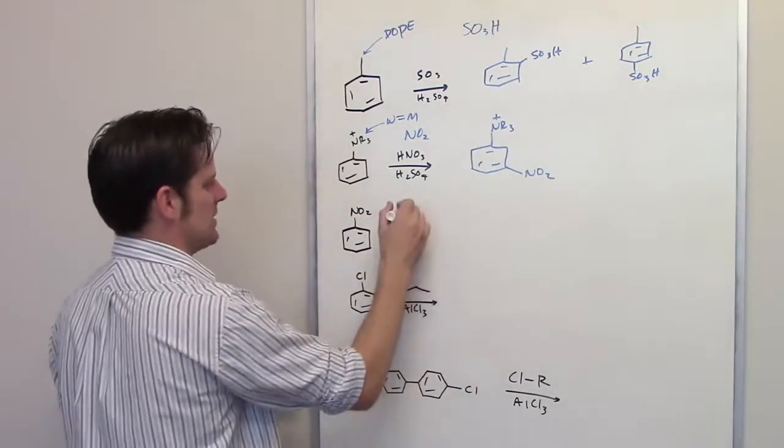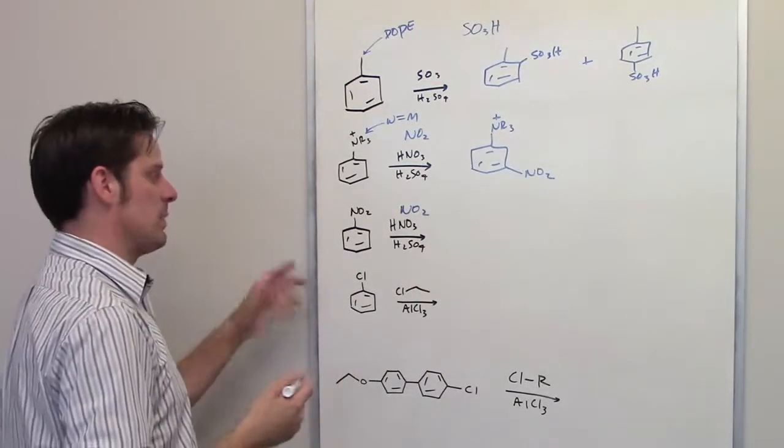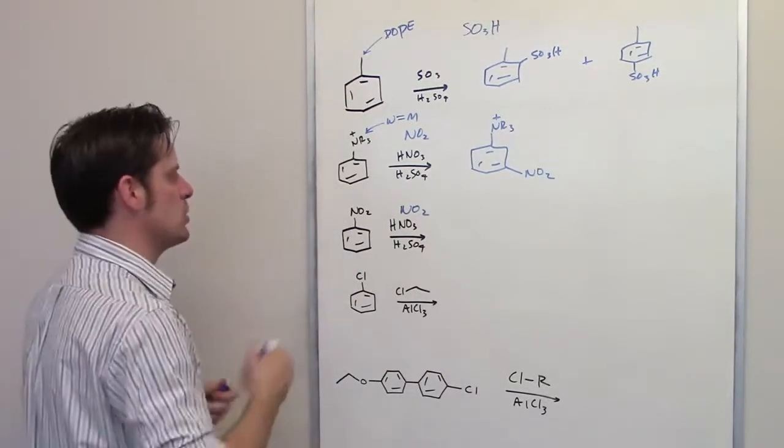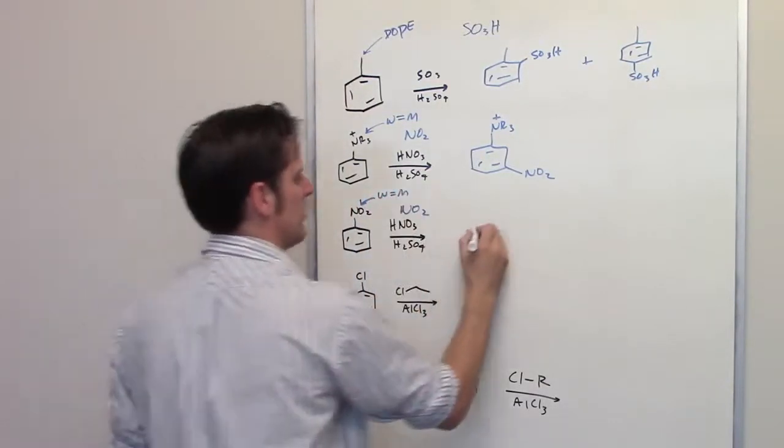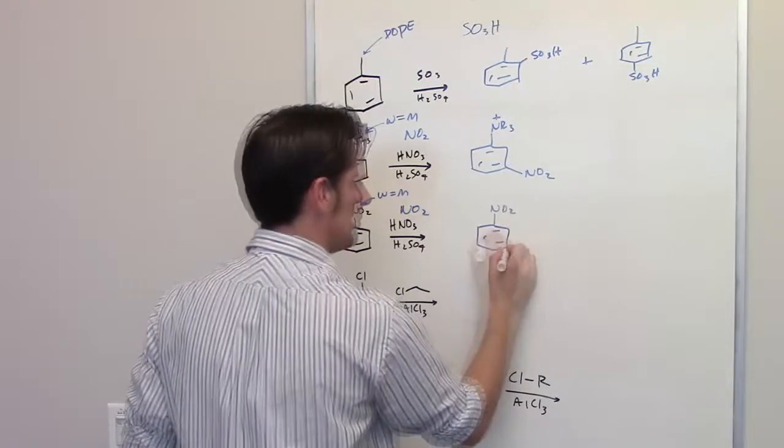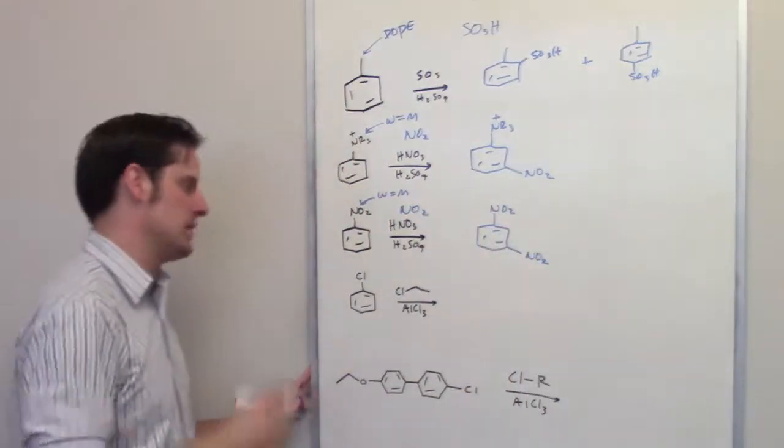The next reaction is exactly the same. It places an NO2 on the ring. Where does it place it? It all depends on the nature of the substituent that's already there. And NO2 is also a withdrawer. So we remember W equals M. So the final product is going to be the dinitrobenzene, where the two nitros are meta to each other.